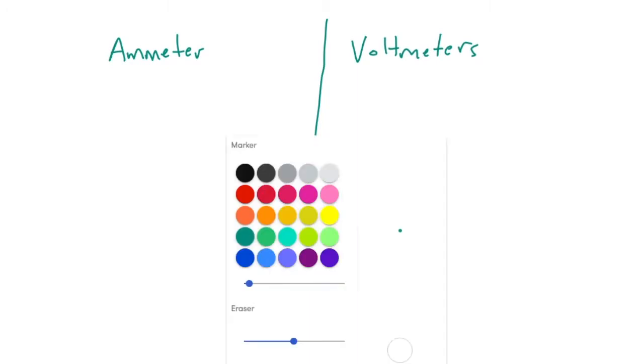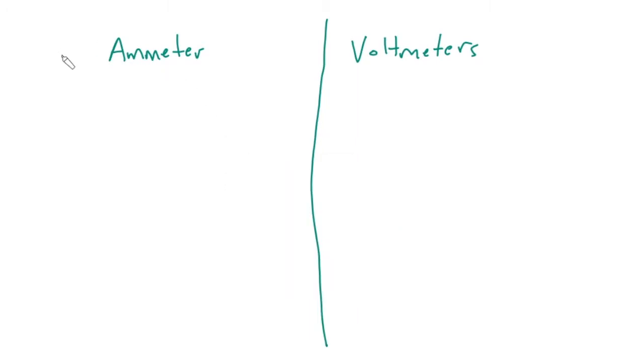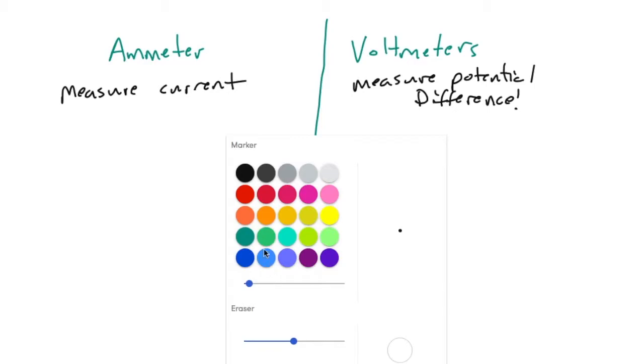And last, ammeters and voltmeters. Okay, so ammeters measure current, voltmeters measure potential difference.